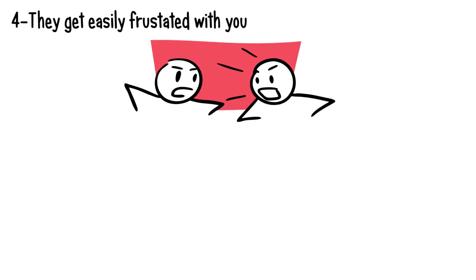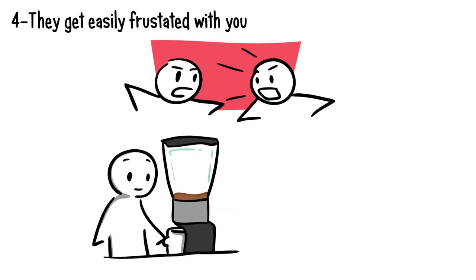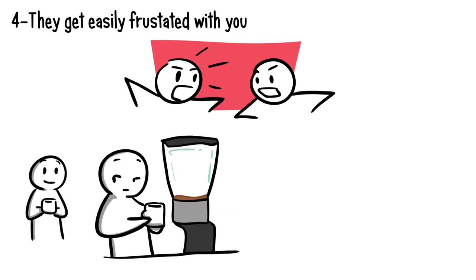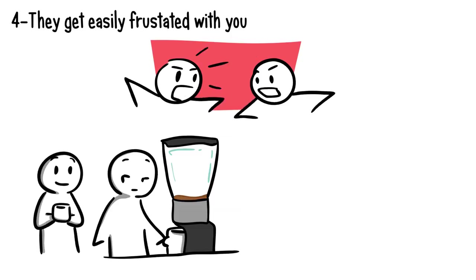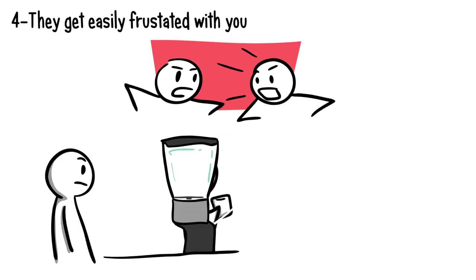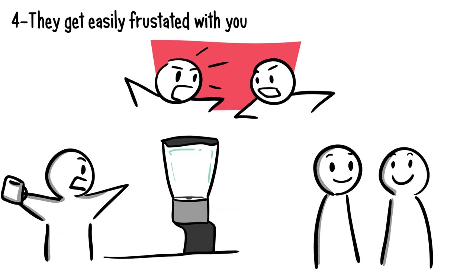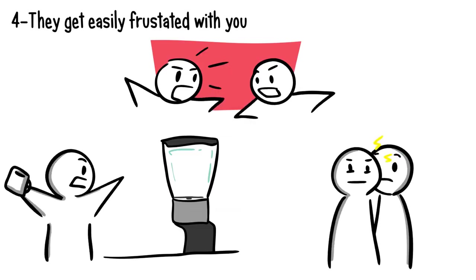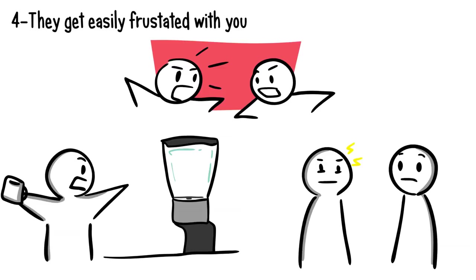Number four: They get easily frustrated with you. Do the two of you argue or disagree over matters on a daily basis? When someone dislikes you, they'll do anything except make things easy for you. They might have been in a good mood, but once they interact with you, they turn sour, bitter, and angry.